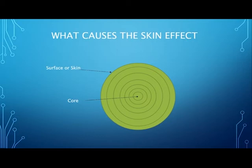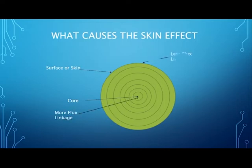The flux set up in the inner filaments of the core is linked to the cross-section of the entire conductor, including the outer surface filaments. Whereas the flux set up in the outer filaments is only linked to the surface and not the core. So there is more flux linkage at the core and less at the surface — flux density increases towards the core and decreases towards the surface.